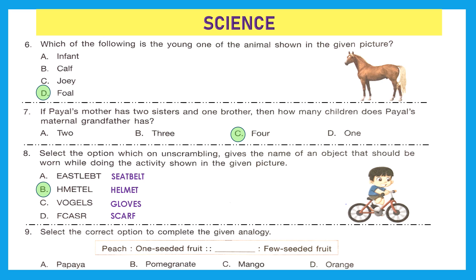Question 9: select the correct option to complete the given analogy. Peach is a one-seeded fruit, and dash is a few-seeded fruit. Let's find which option is a few-seeded fruit. Papaya and pomegranate are many-seeded fruits. Orange is a few-seeded fruit, and mango is a one-seeded fruit. So the answer is option D, orange, because orange is a few-seeded fruit.